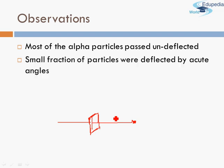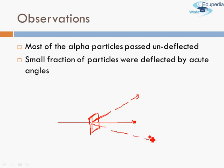The second observation was that a very small fraction of particles were deflected by acute angles — they were deflected in small directions, still passing through the gold foil but deflected by small angles less than 90 degrees.